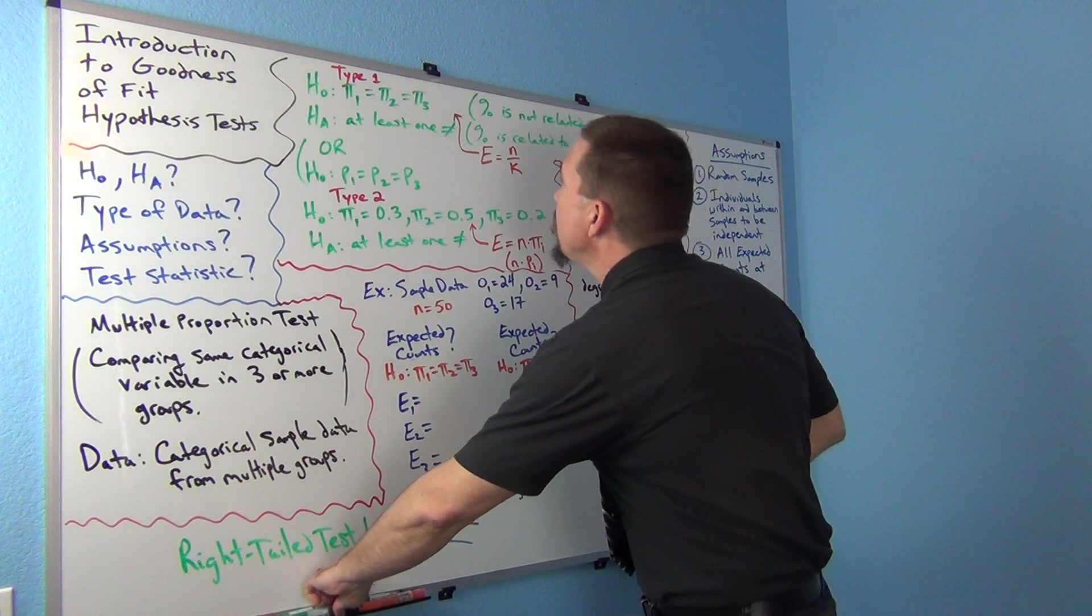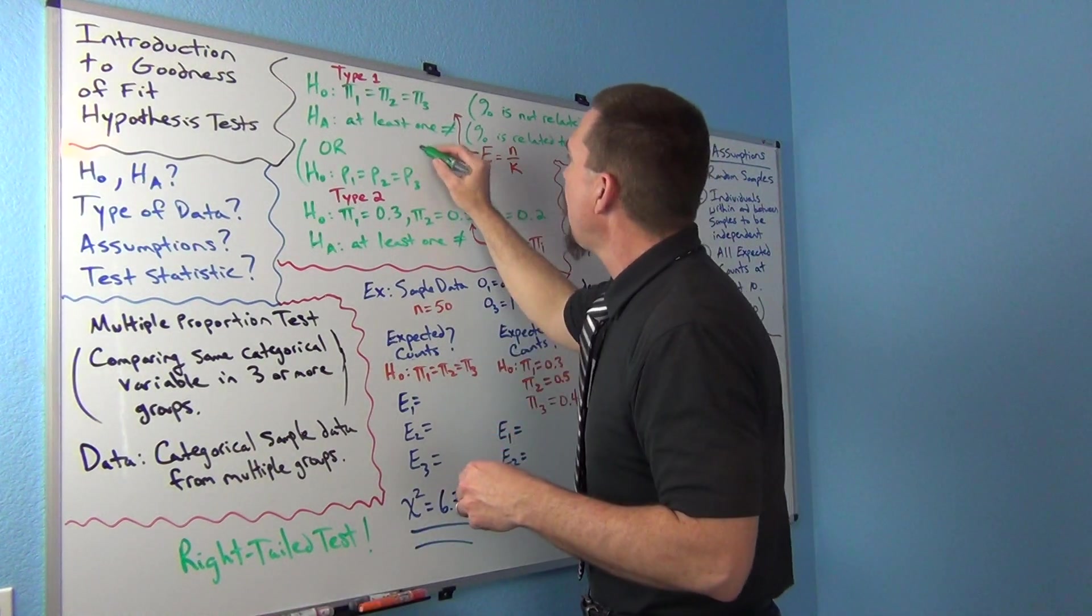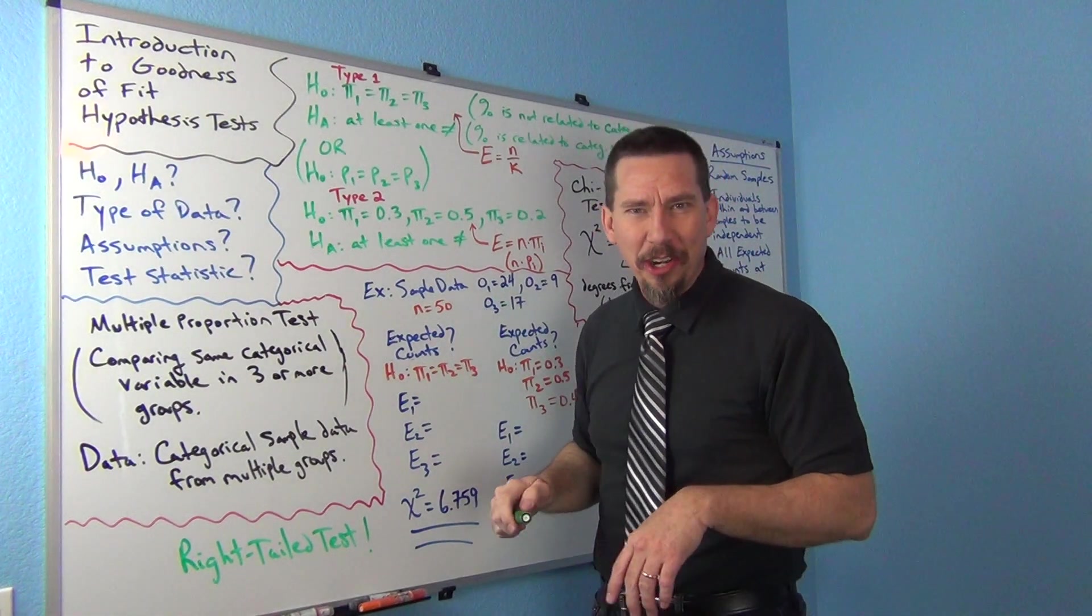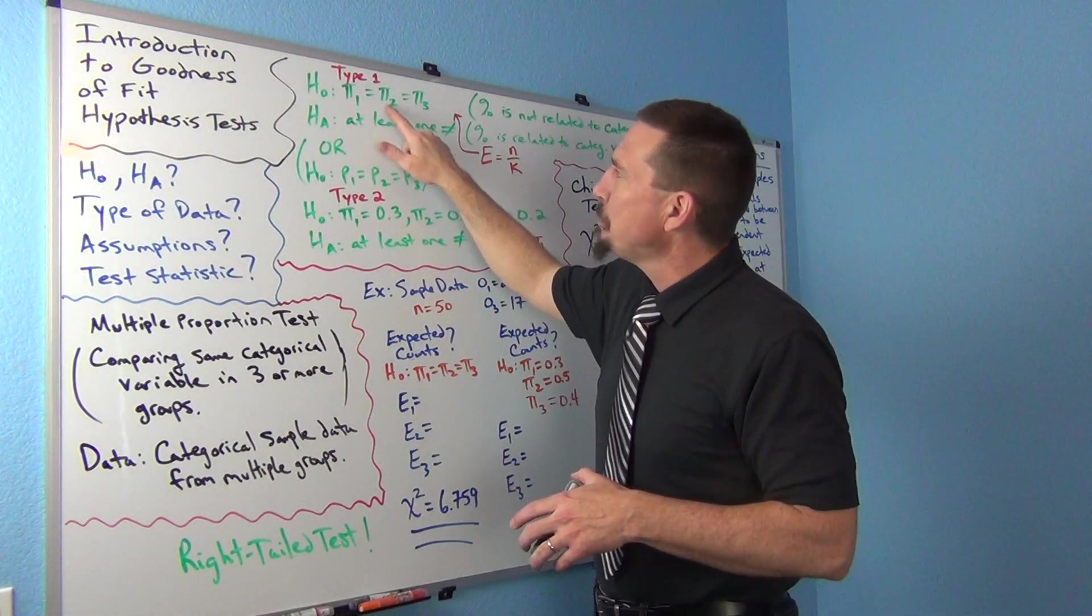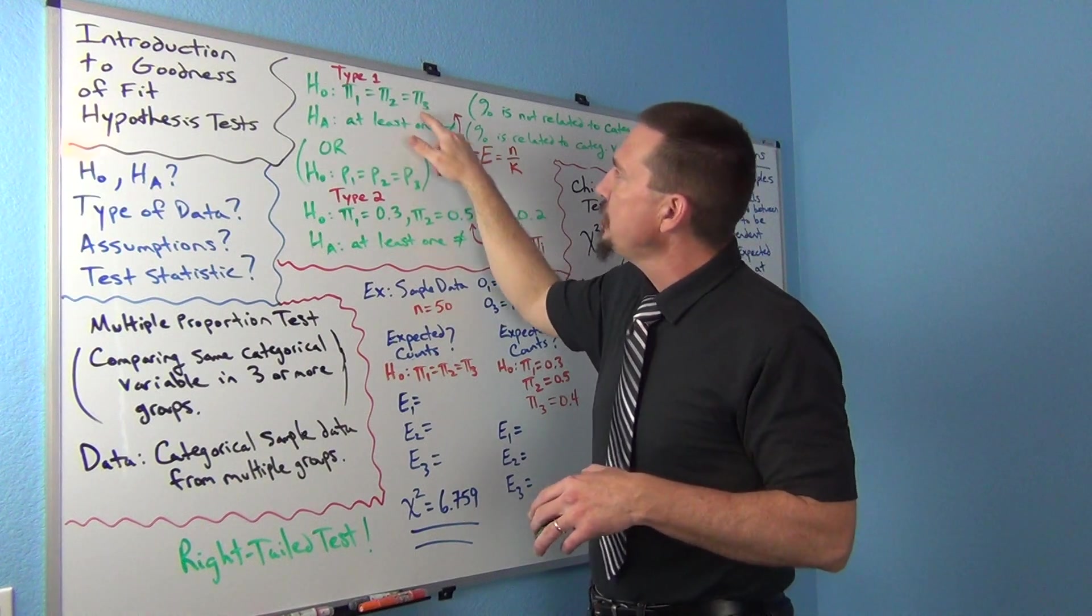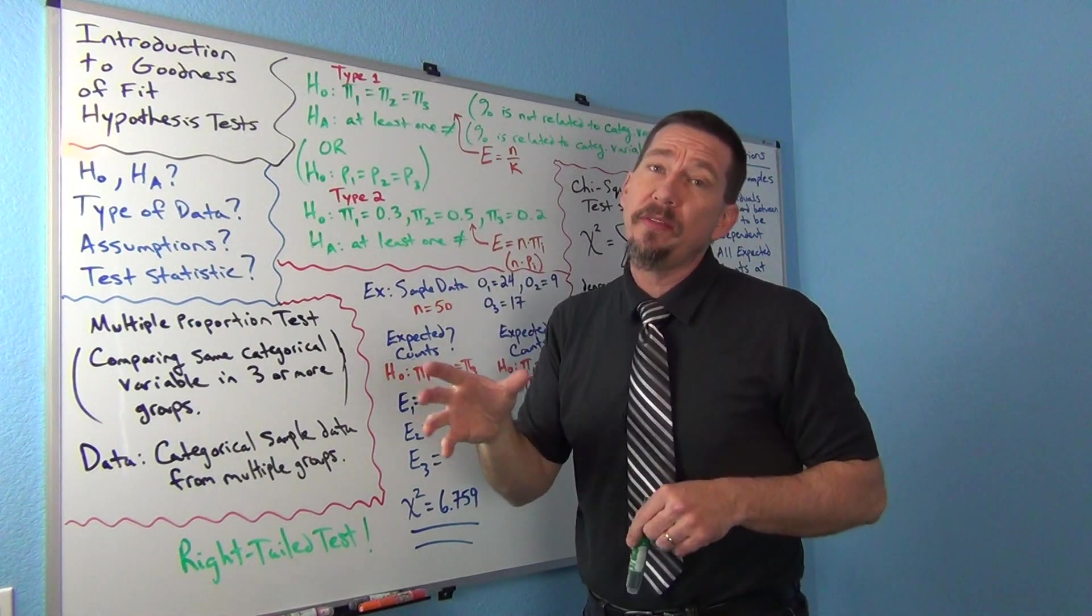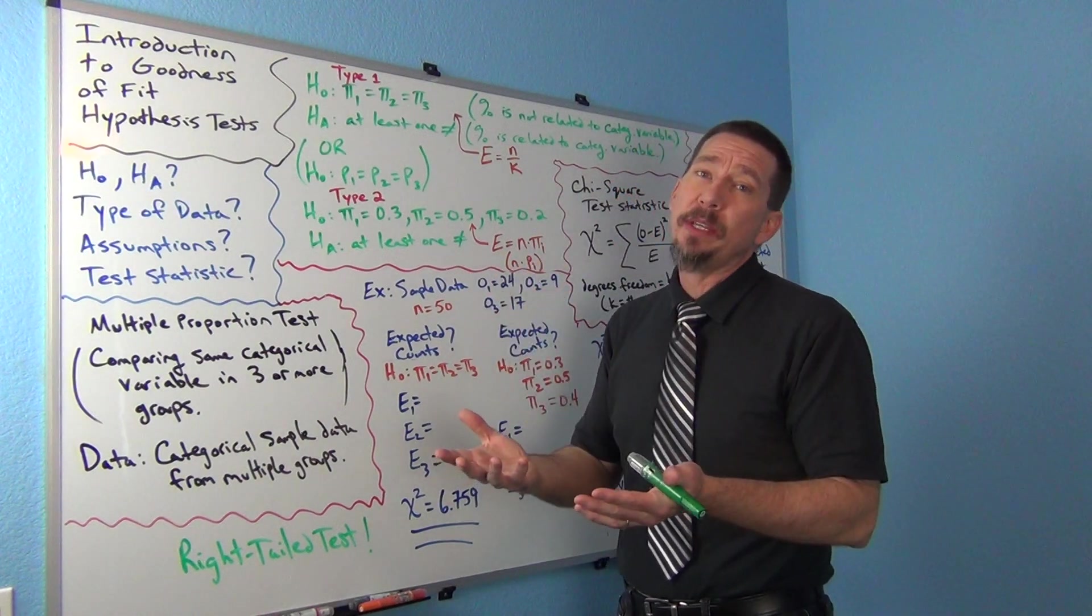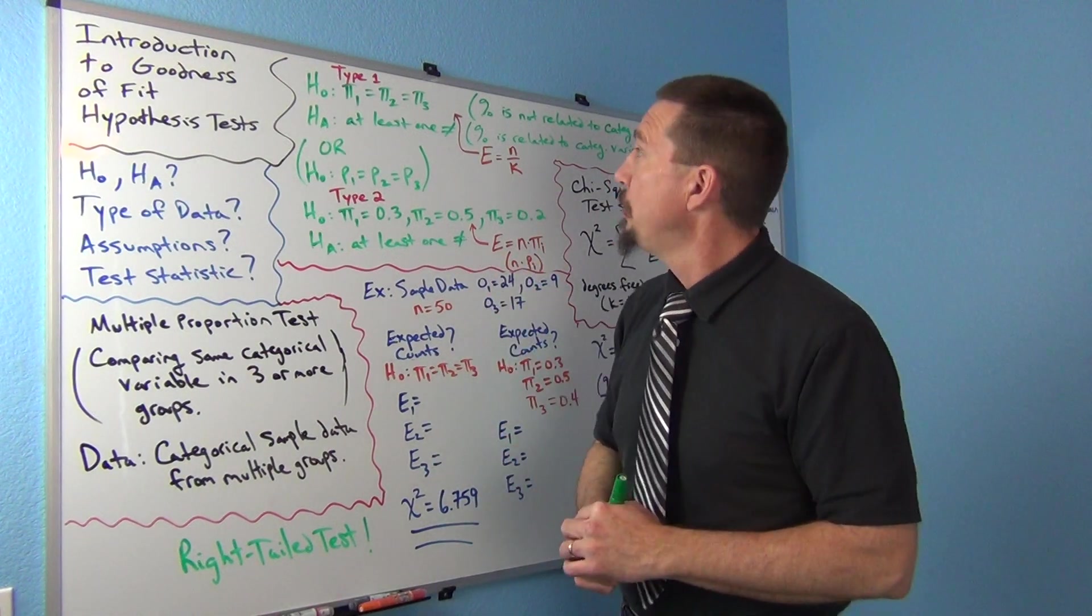Sometimes we just want to check if the percentage is the same in different groups, right? So is the percentage of people that have a certain sickness the same in three different cities? Usually the null hypothesis would be π1 equals π2 equals π3. The alternative hypothesis, much like we saw, this kind of almost looks like the null and alternative hypothesis for ANOVA, except it's π instead of μ. But at least one is not equal.